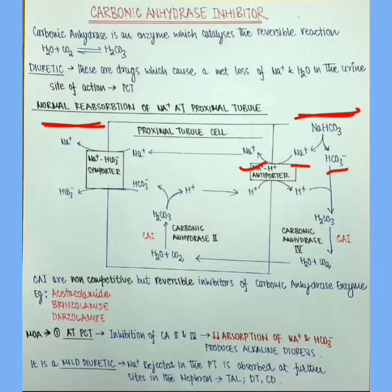Sodium is transported inside the PCT cell by sodium hydrogen antiporter and along with it hydrogen is transported into the lumen. Hydrogen combines with HCO3- to form H2CO3. H2CO3 breaks into water and CO2 in the presence of carbonic anhydrase type 4. It is also known as dehydration of H2CO3 because water is formed.